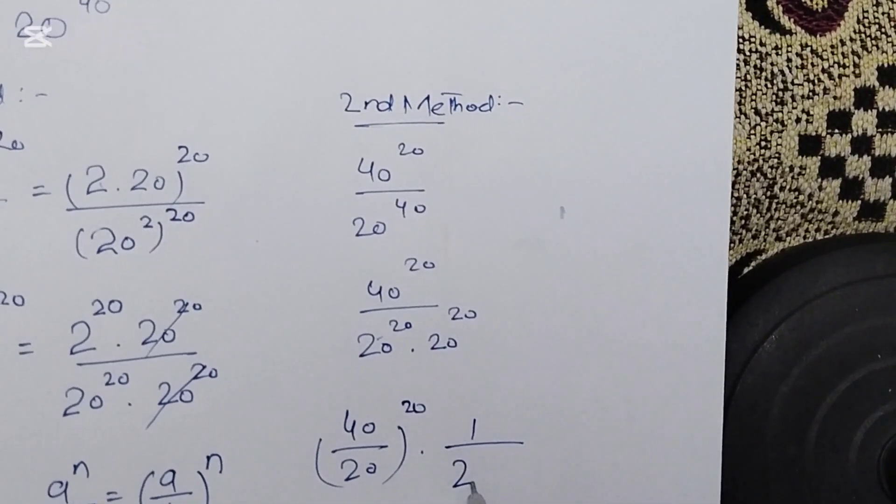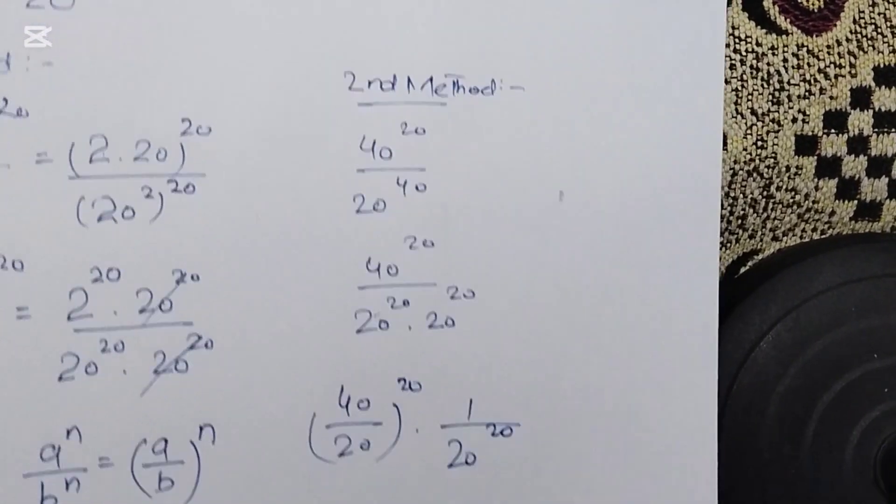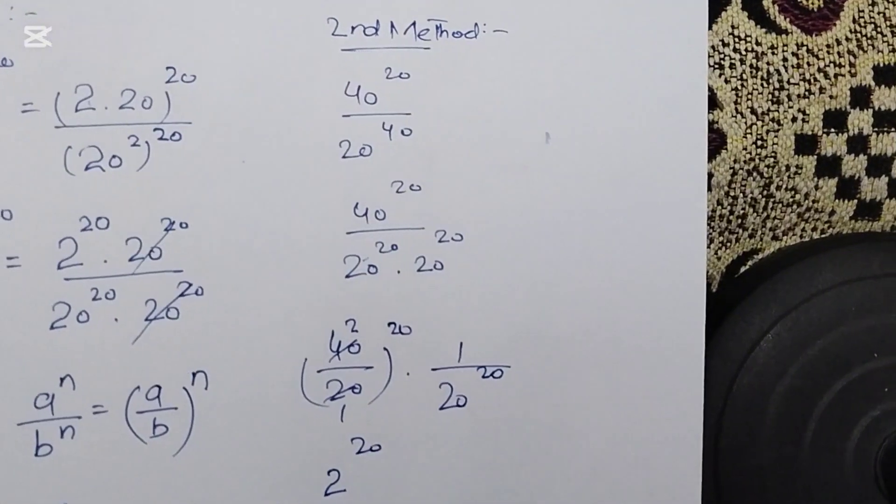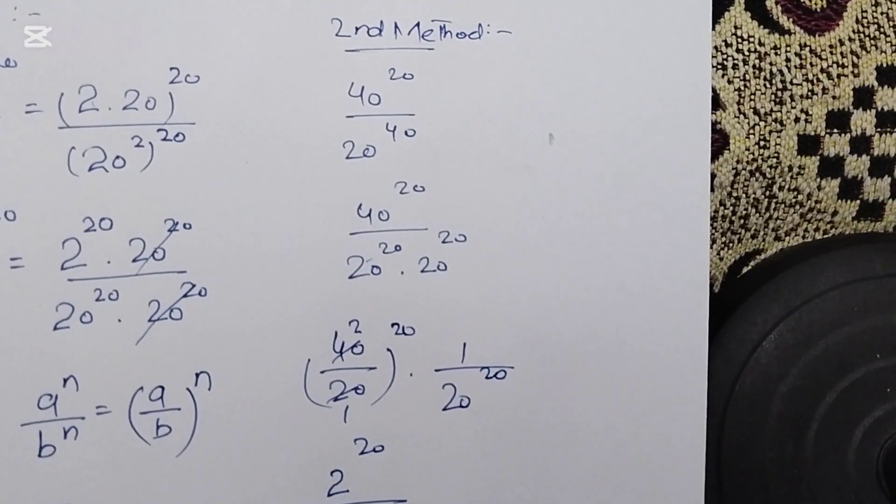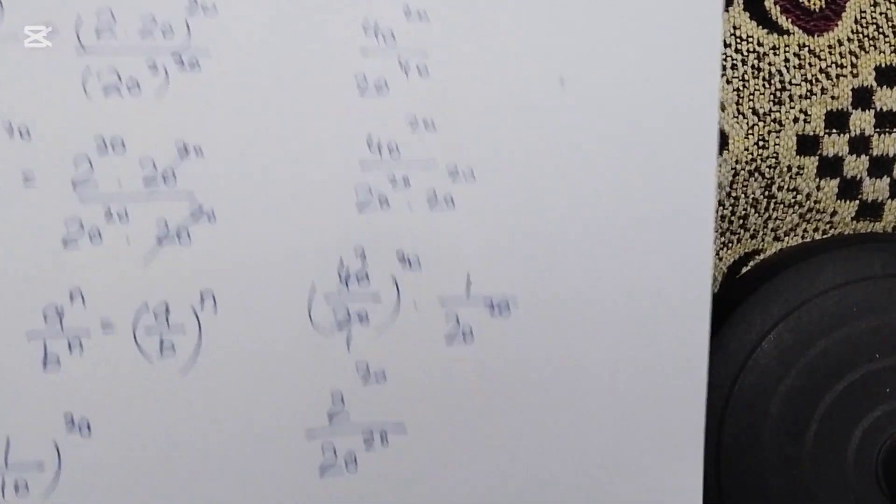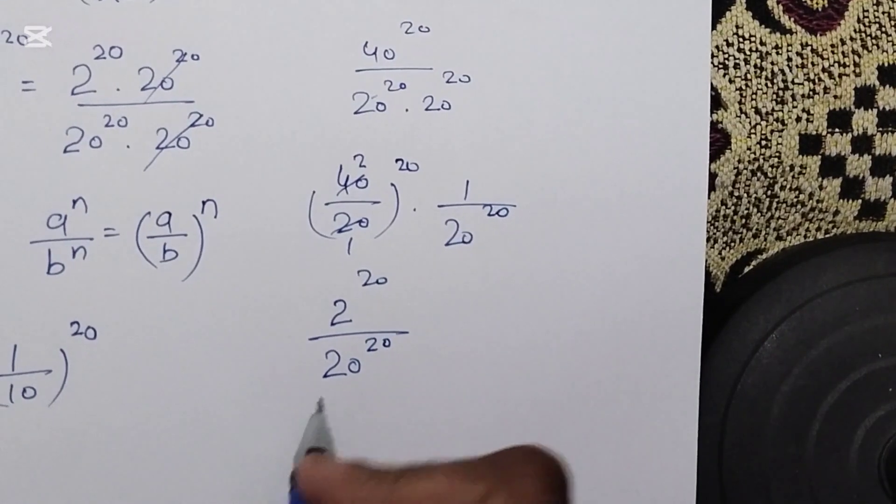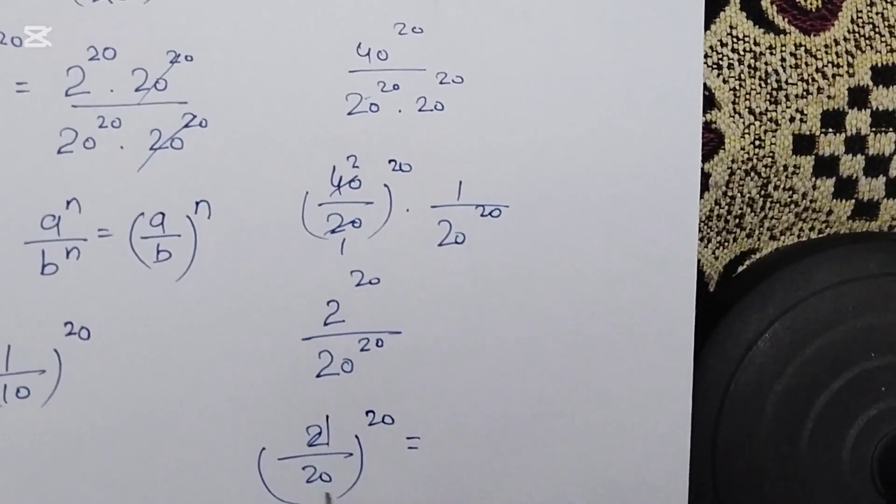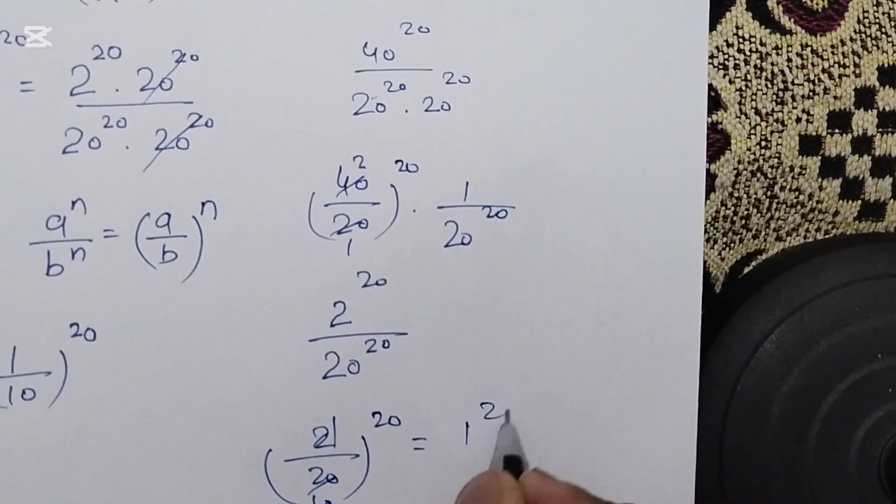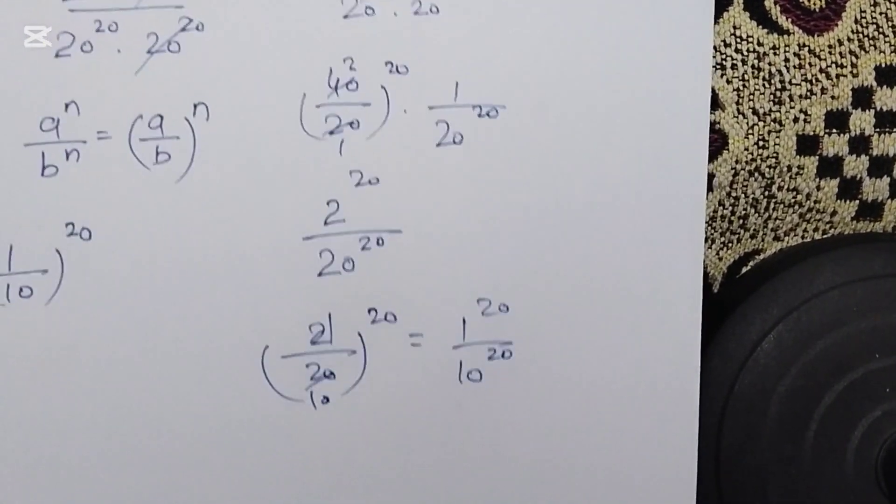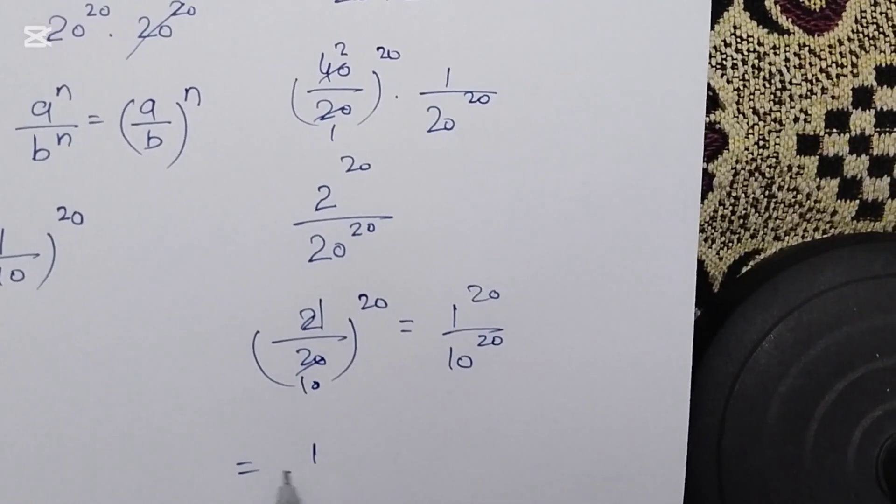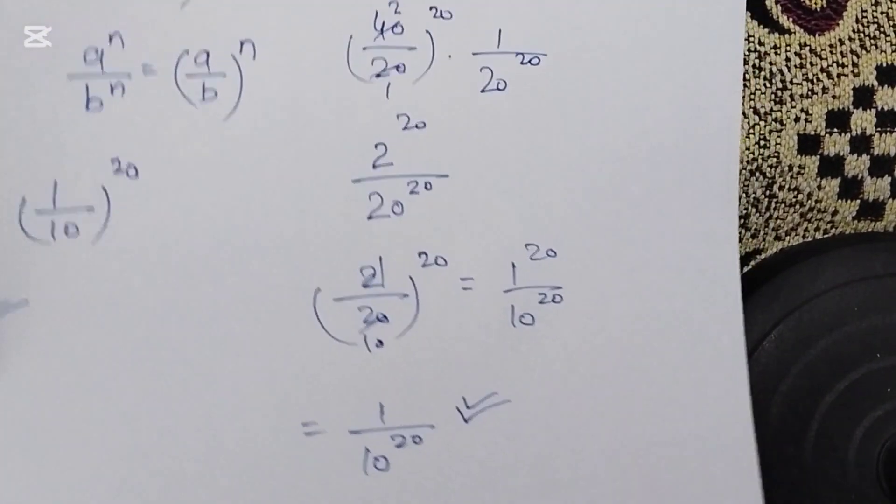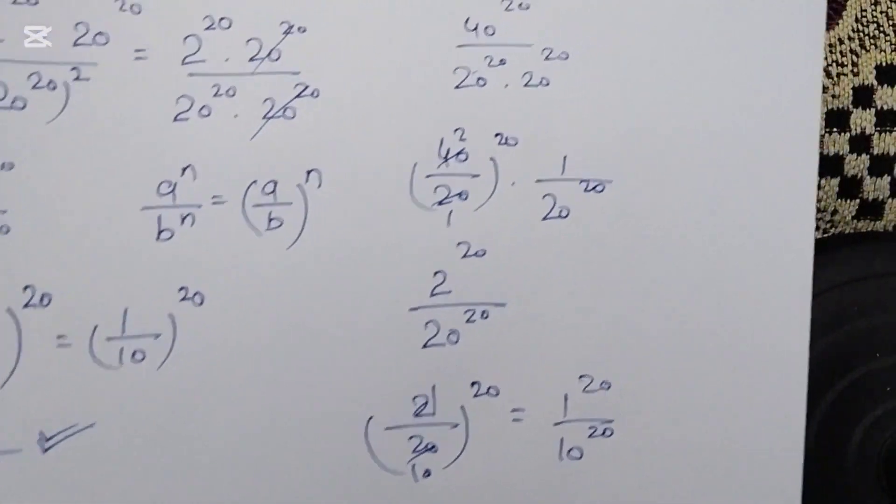Times 1 over 20^20. 40 divided by 20 is 2, so 2^20 over 20^20. We can write this as (2 over 20)^20, which is (1 over 10)^20, equal to 1 over 10^20. This is the same answer as you get from method 1. Thank you for watching my video.